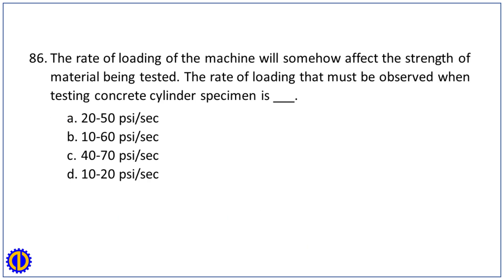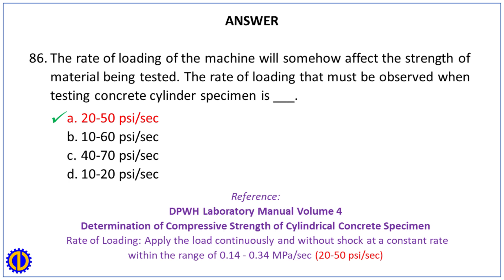Question 86/87. The rate of loading of the machine will affect the strength of the material being tested. The rate of loading that must be observed when testing a concrete cylinder specimen is: A. 20–50 psi per second. B. 10–60 psi per second. C. 40–70 psi per second. D. 10–20 psi per second. Answer: A. 20–50 psi per second. Reference: DPWH Laboratory Manual Volume 4, Determination of Compressive Strength of Cylindrical Concrete Specimen — apply load continuously at a constant rate of 0.14 to 0.34 MPa per second, or 20–50 psi per second.